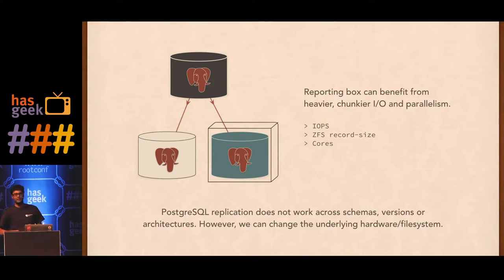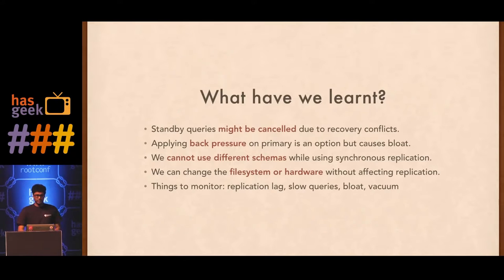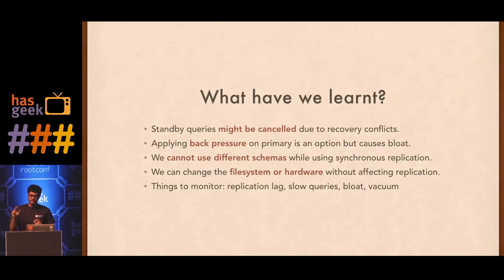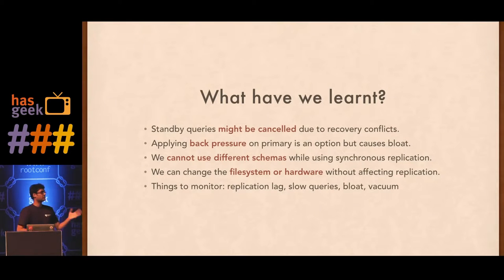If you're running 10-minute long queries on a single database, that takes up a core — so more cores really help. What we learned: your queries might be cancelled, so handle that and don't throw 500s to your clients. You can apply back-pressure via hot standby feedback, but it may cause too much bloat. You can't always use different schemas with synchronous binary replication. You can change the file system and hardware around Postgres without affecting replication.